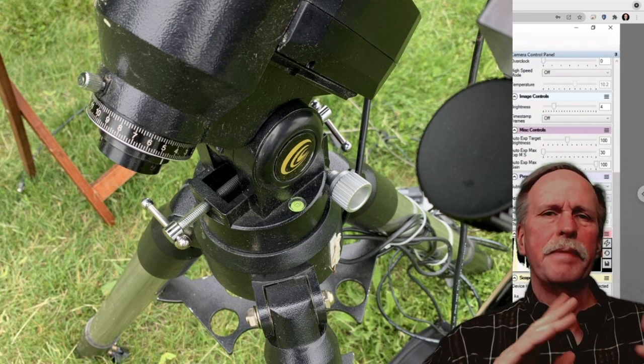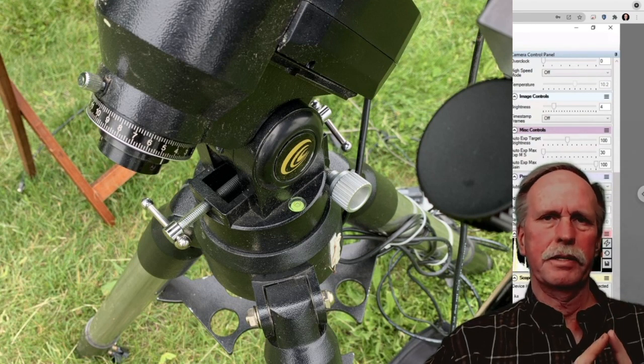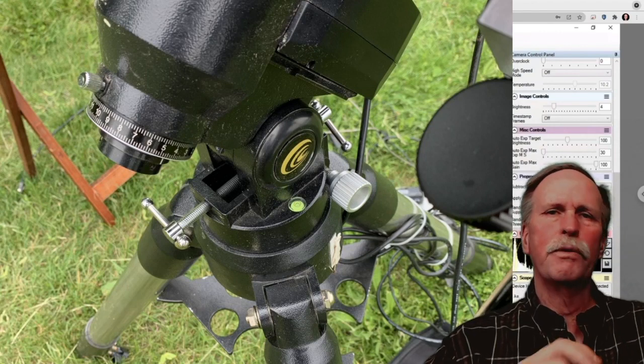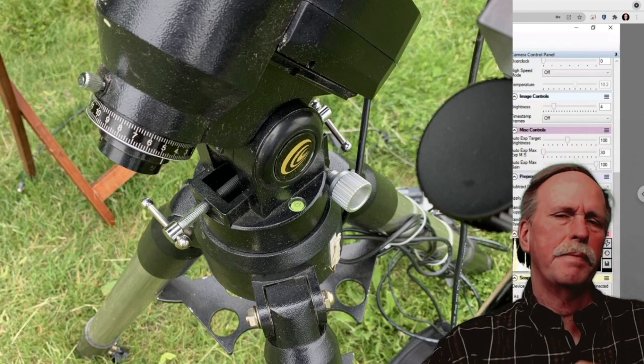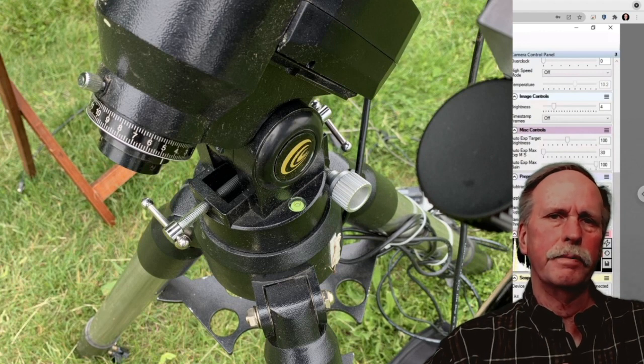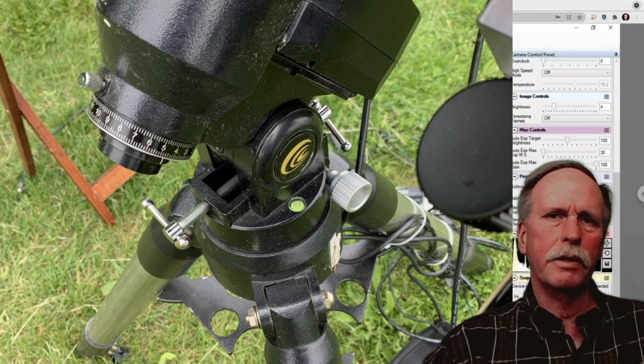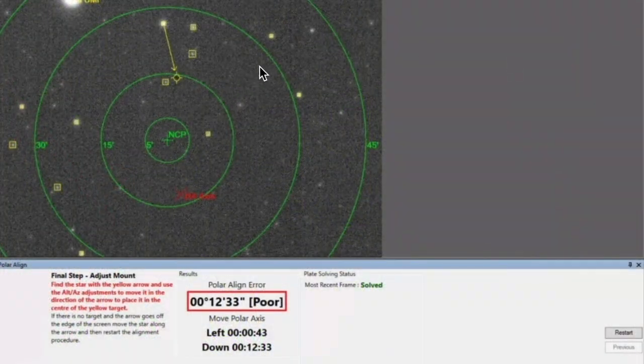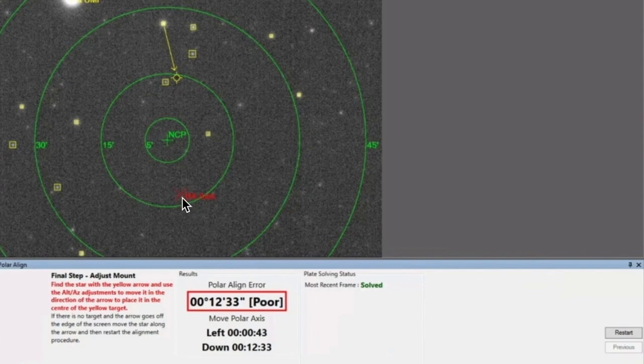Now the key to this is make tiny little adjustments and then let sharp cap solve the picture before you make another adjustment because it's very easy to overshoot. So let's go ahead and watch me go through the alignment procedure on my telescope last night.